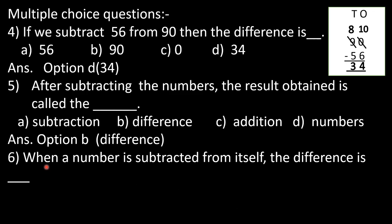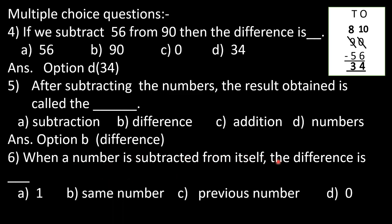Question number 6: when a number is subtracted from itself, the difference is dash. Options: A: 1, B: same number, C: previous number, D: zero. The answer is option D, zero.